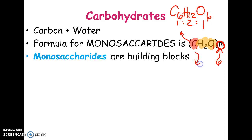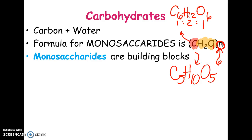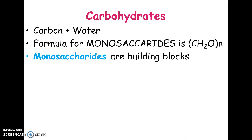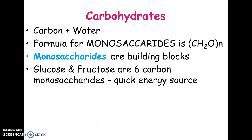Let's try one: if it was five carbons, how many hydrogens would it have? It would have 10 hydrogens. And how many oxygens? Five. So all monosaccharides have this same base formula — CH2O to the N — and whatever N is, you multiply that out and it's always going to be a one-to-two-to-one ratio of carbons to hydrogens to oxygens. Since monosaccharides are the building blocks, here are a couple of examples — there are others, but these are the main ones.